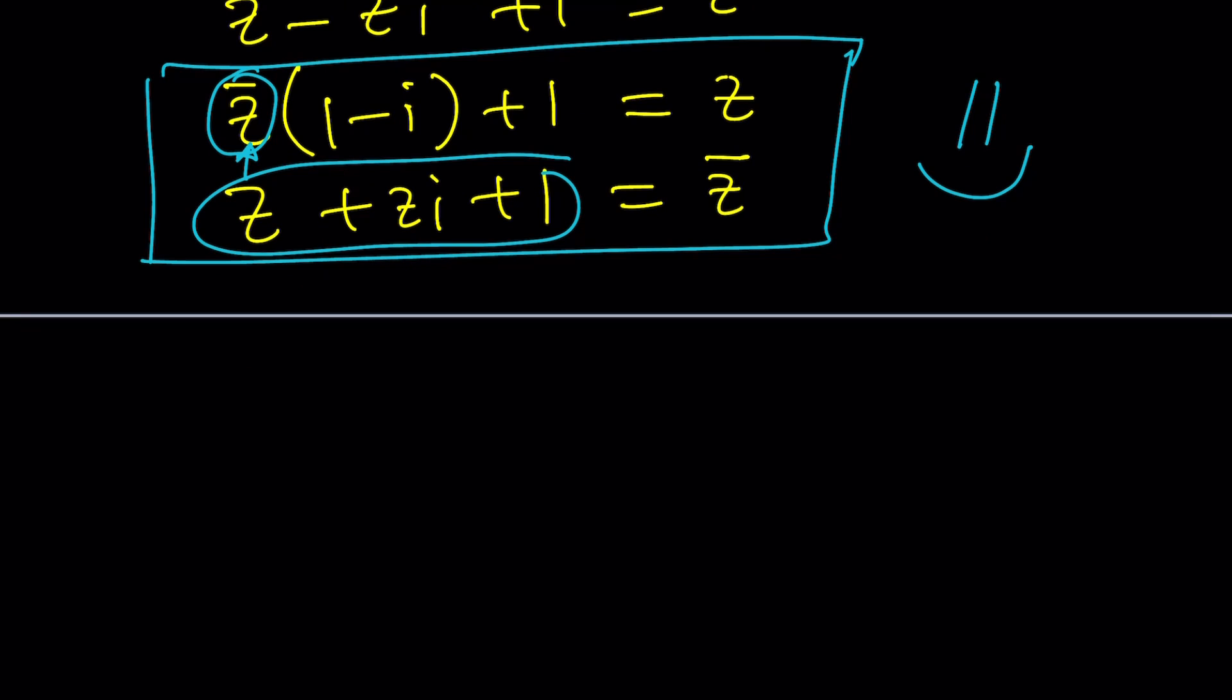So if you replace, I'm going to write one minus i first. Z bar with z plus zi plus one. And then of course, you have to add one. And that should give you z from the first equation, right? Make sense? This is our equation. We're going to go ahead and simplify this and solve for z. That's going to be our first method. All right, let's do it.